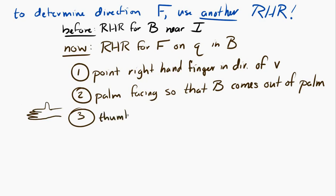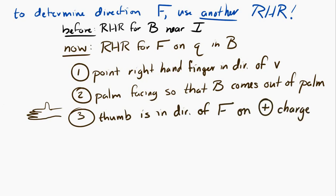Point your fingers in the direction of the velocity. Your palm is oriented so that the magnetic field is coming out of your palm. Hold your thumb at right angles to your palm and at right angles to your fingers — the thumb now points in the direction of the force on a positive charge. If you have a negative charge, the force is in the opposite direction.